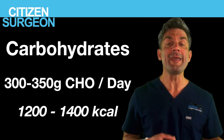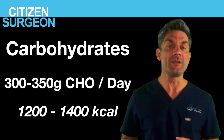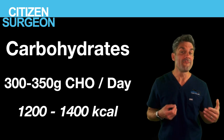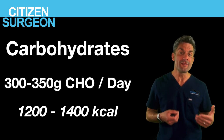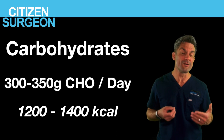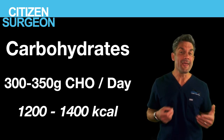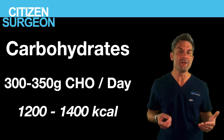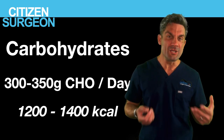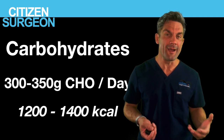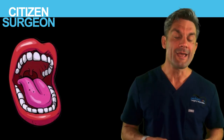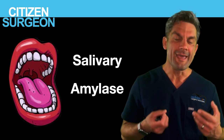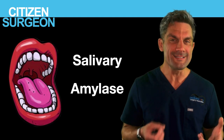We take about 300 to 350 grams per day of carbohydrates — about four kilocalories per gram — so that's between 1,200 and 1,400 kilocalories of carbohydrates a day. Based on a 2,000 calorie diet, that's a significant amount of energy. Digestion and absorption of carbohydrates begins in the mouth — not only by chewing, but because we have salivary amylase, which helps break down starch.